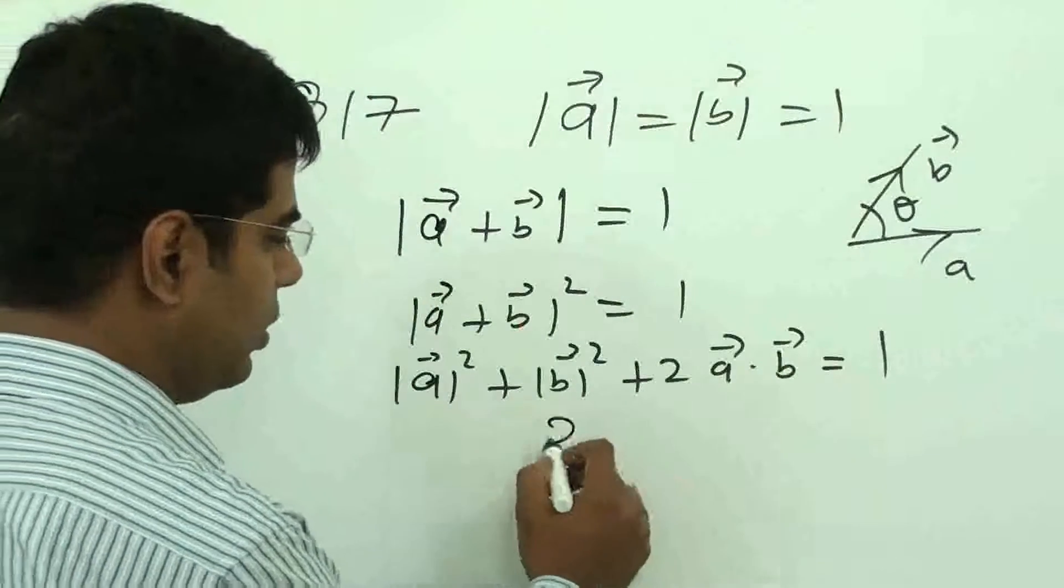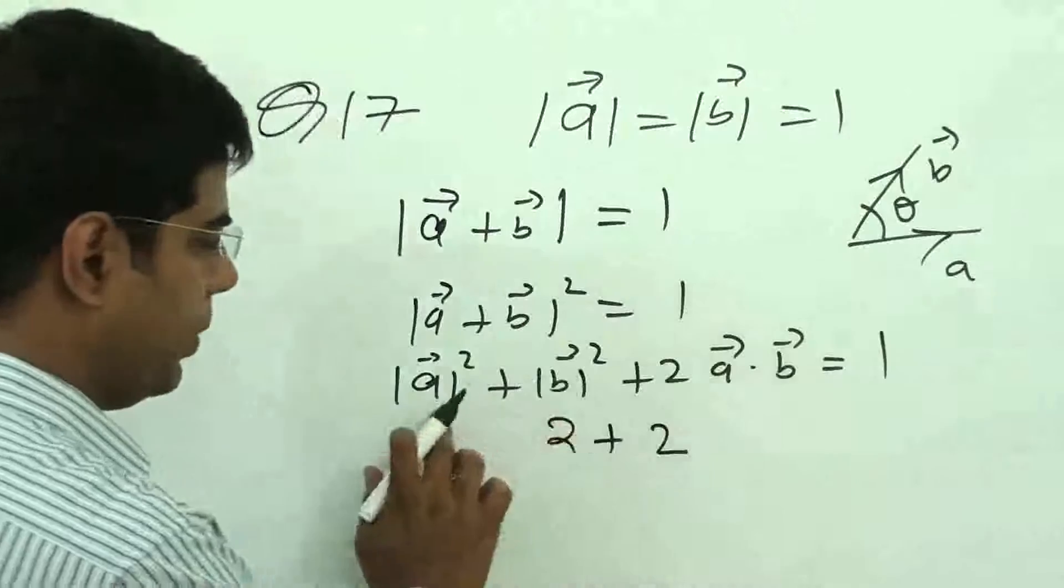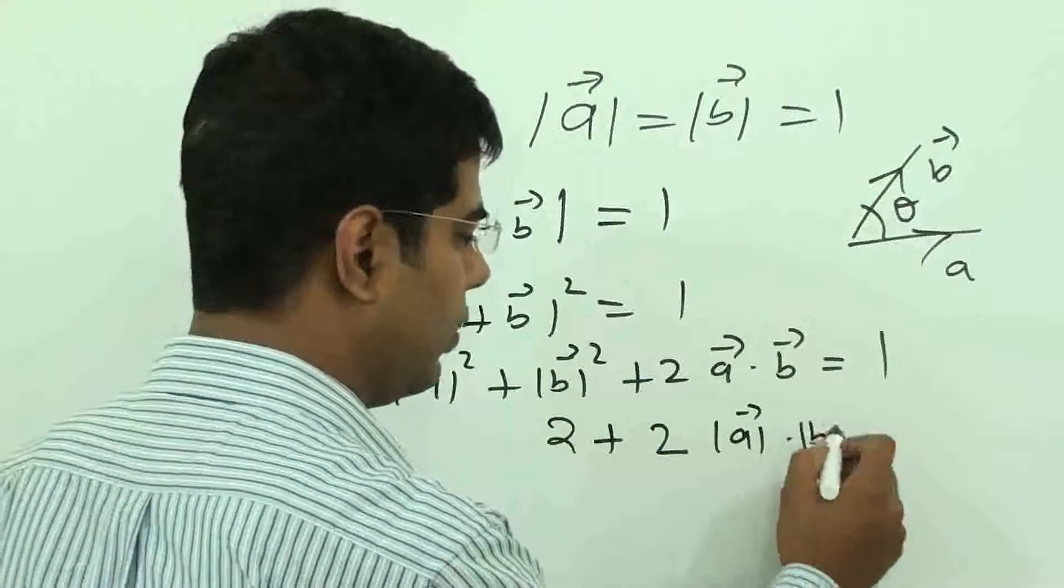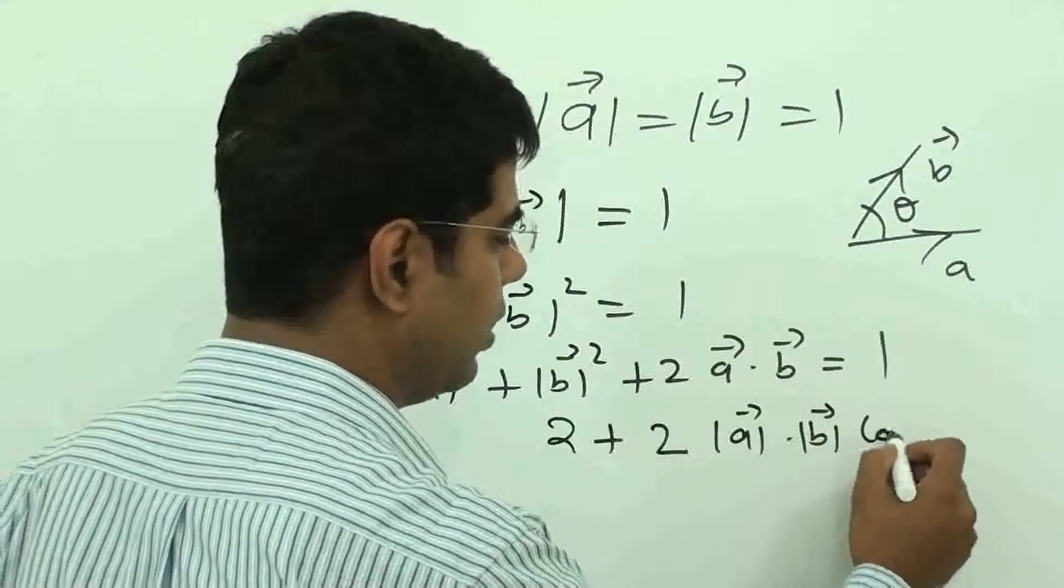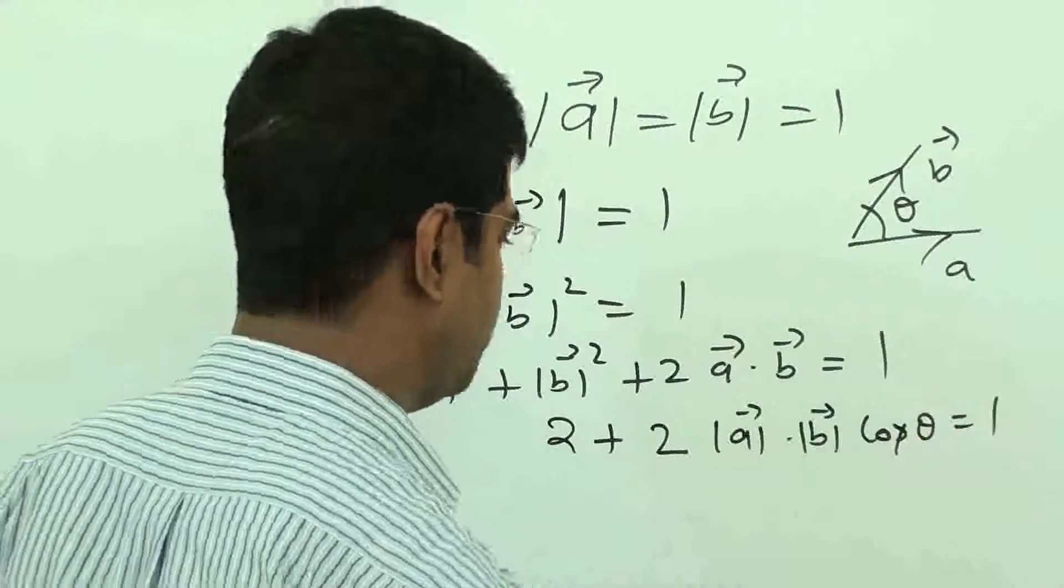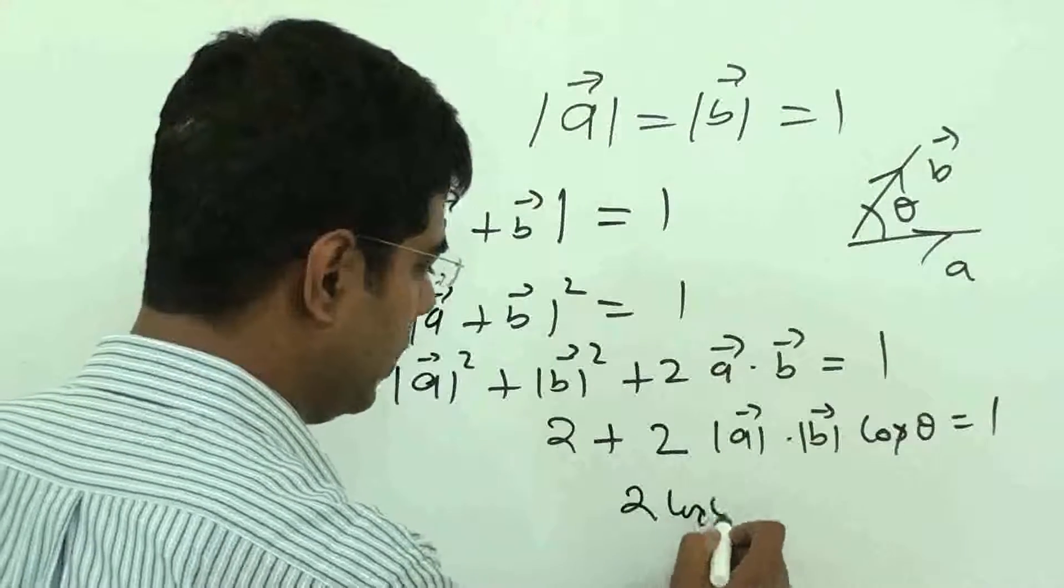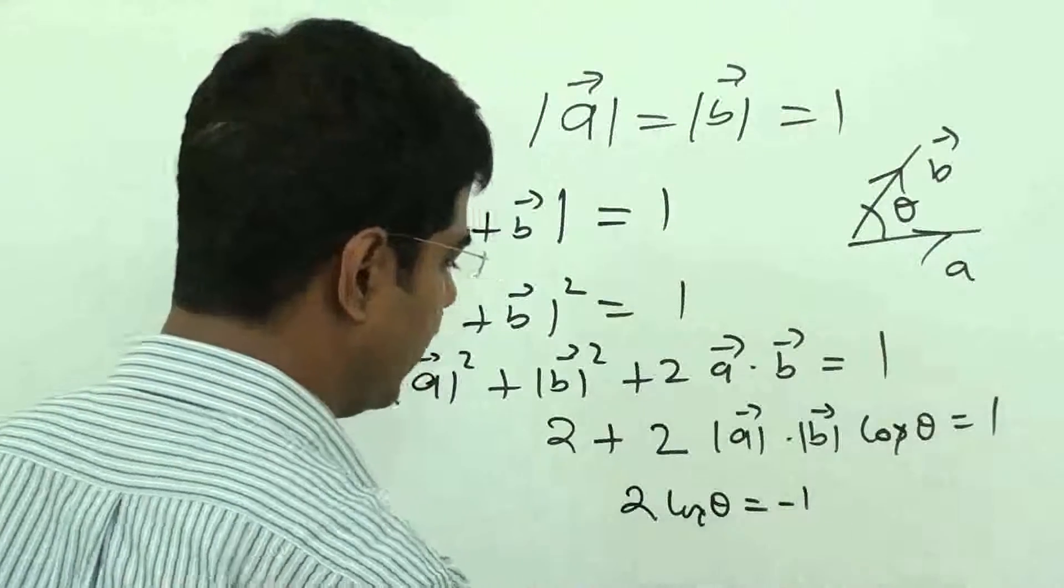It will be 1, 1. So 2 plus 2, 1 plus 1, 2 is equal to 2.